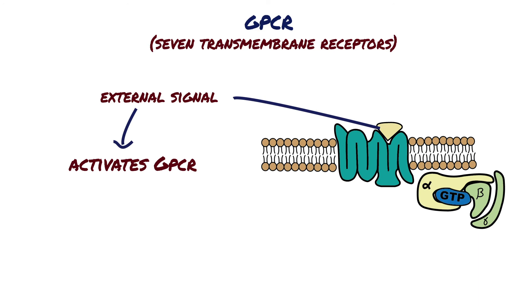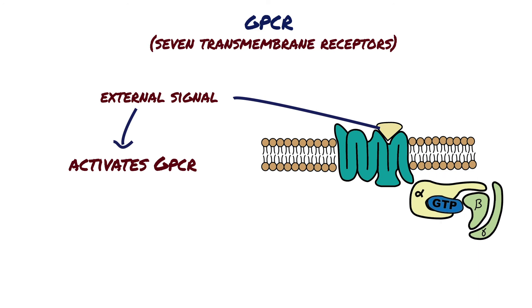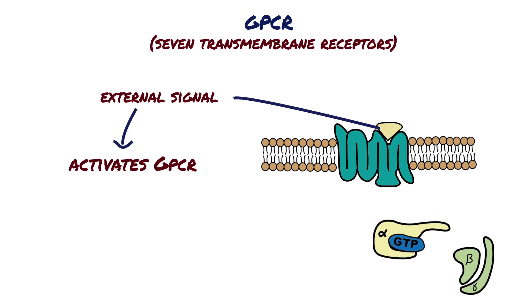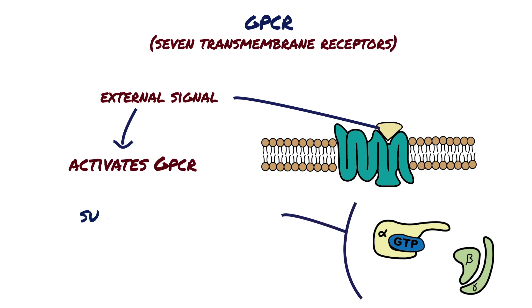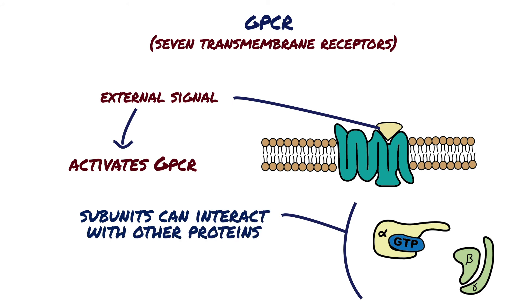Now, the active G-protein separates into two pieces — one called the alpha subunit, the other consisting of the beta and gamma subunits — and they are freed from the G-protein coupled receptor. The subunits can interact with other proteins, triggering a signaling pathway that leads to a response.